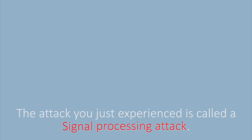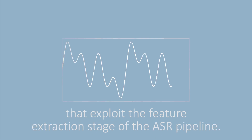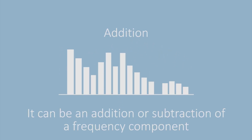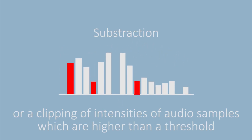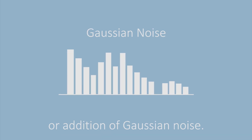The attack you just experienced is called a signal processing attack. Signal processing attacks are a class of adversarial attacks that exploit the feature extraction stage of the ASR pipeline. It can be an addition or subtraction of a frequency component, a clipping of intensities of audio samples which are higher than a threshold, or addition of Gaussian noise.